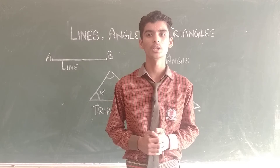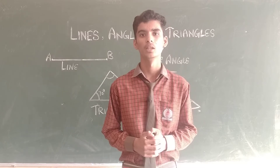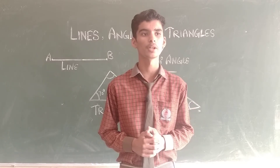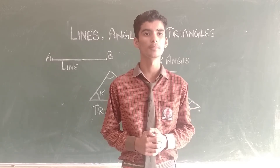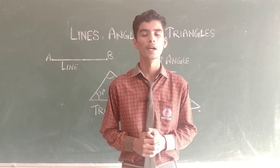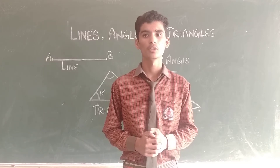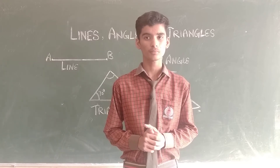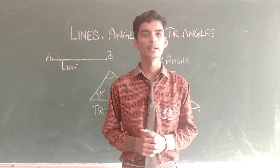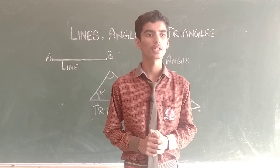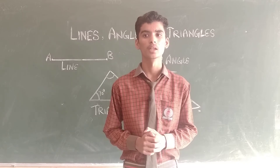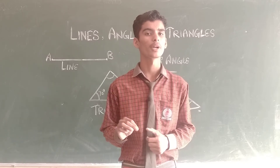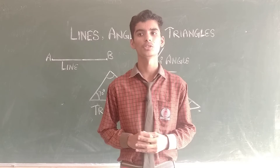The seventh one is complete angle — an angle whose measurement is exactly 360 degrees is called a complete angle. Now about triangles: a polygon bounded by three line segments is called a triangle. There are three types of triangle on the basis of sides.